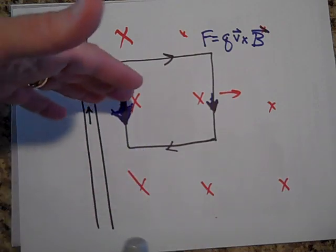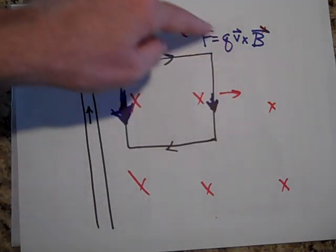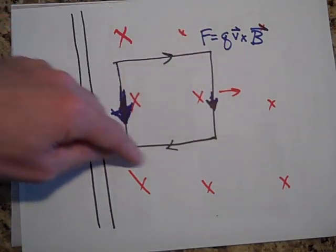So these electrons get pushed down a lot more than these guys do, and so that forces the current this way, which is the flow of conventional current, the flow of positive charge.